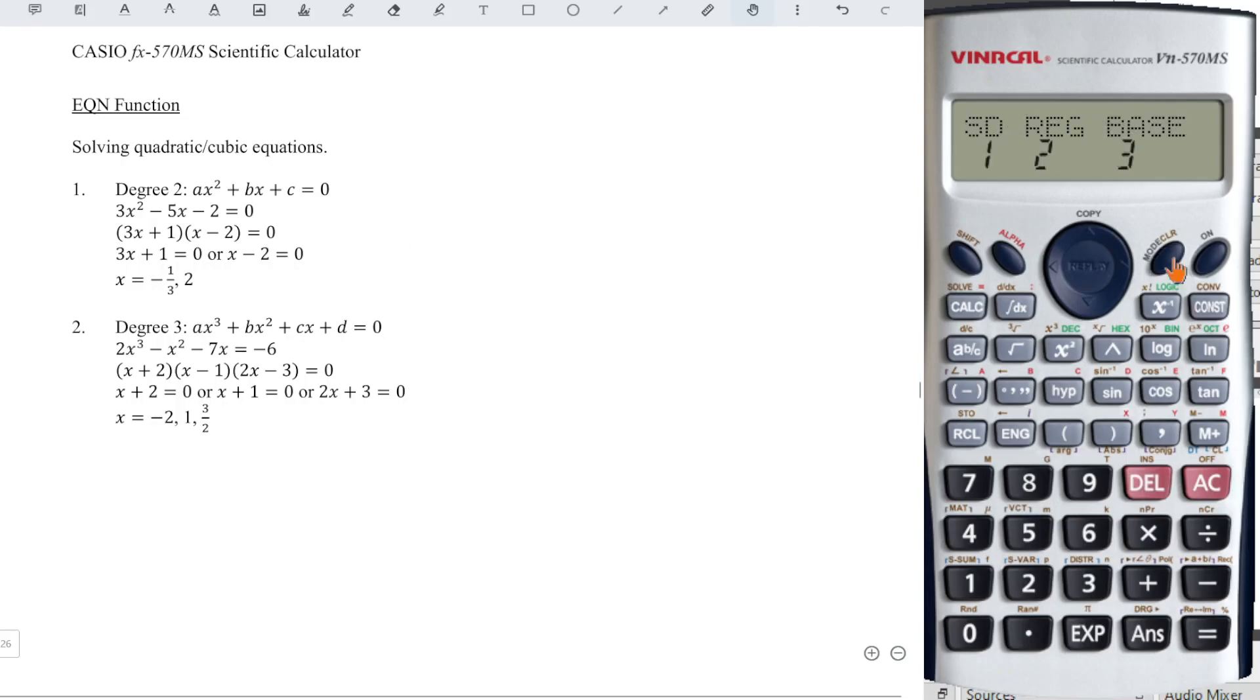First, we press mode for 3 times until we see EQN and the equation function which is number 1. Since we have only 1 unknown which is x, we press right to get degree and we should refer to the highest power. For this case is 2, so we choose 2.